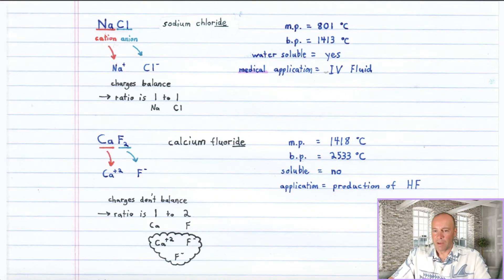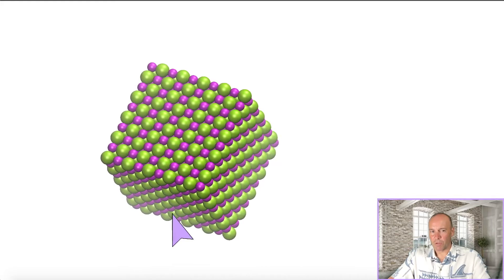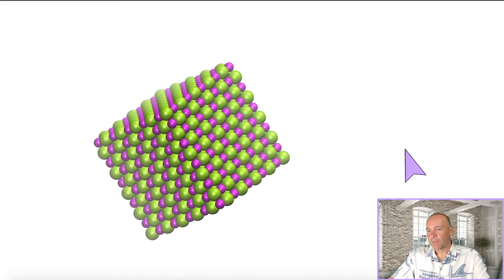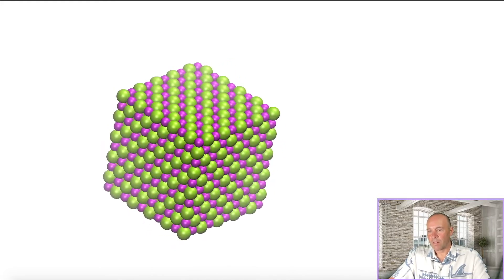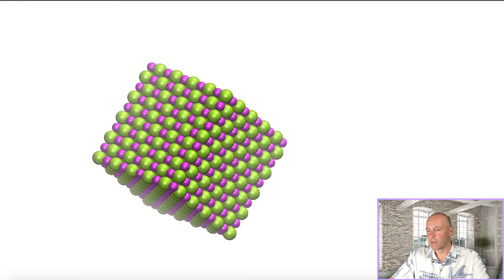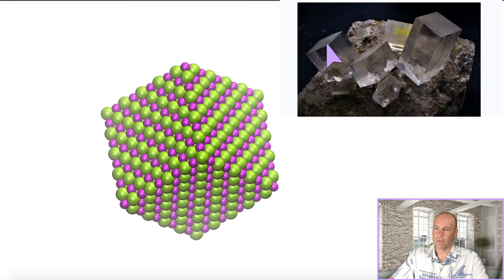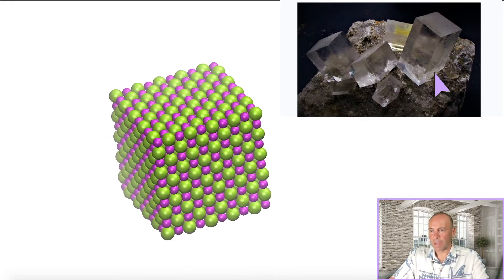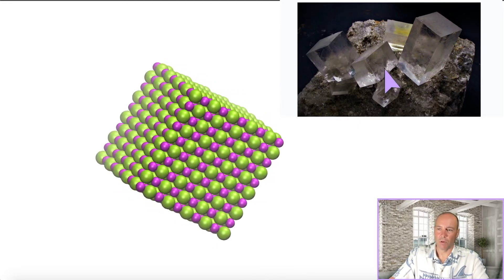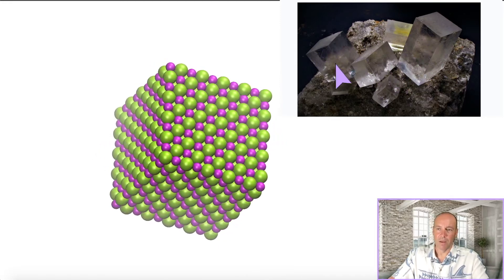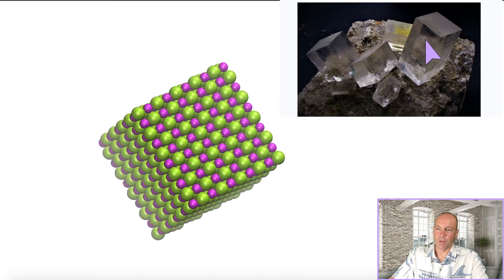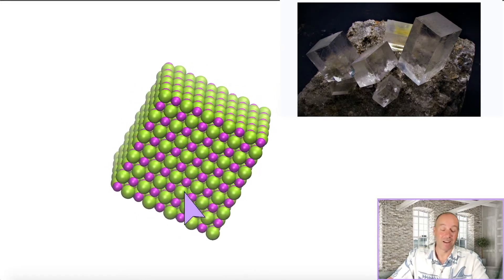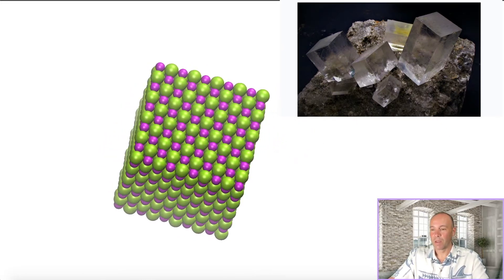Interestingly, when you look at this nice geometrical structure that's too small to see, it is actually reflected in the macroscopic crystal structure. Here are a couple of very beautiful sodium chloride crystals — naturally occurring, the kind you might find in a cave. These nice crystals are simply a reflection of what's going on at the atomic ionic level.